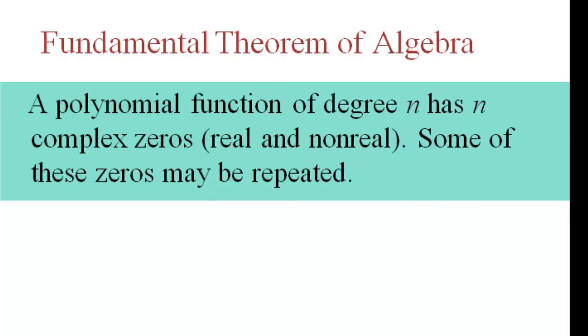This says that if you have a polynomial function of degree n, it will have n complex zeros. Some of them real, some of them may be non-real, and some of them can be repeated.